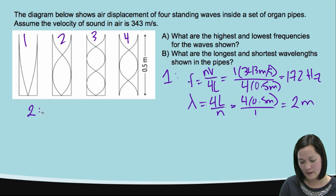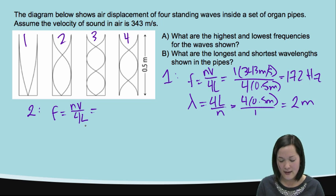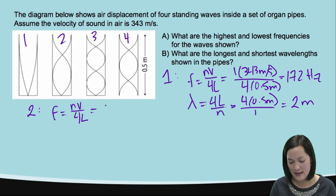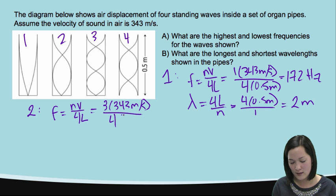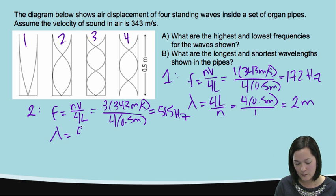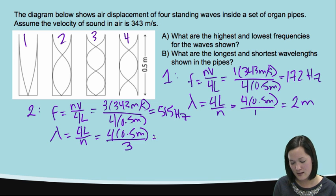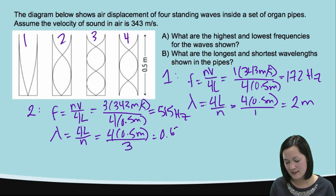For pipe 2, still a closed-end tube, now at the third harmonic, N equals 3. Frequency equals 3 times 343 over 4 times 0.5 meters, which equals 515 Hz. The wavelength equals 4 times 0.5 meters divided by 3, giving a wavelength of 0.67 meters.